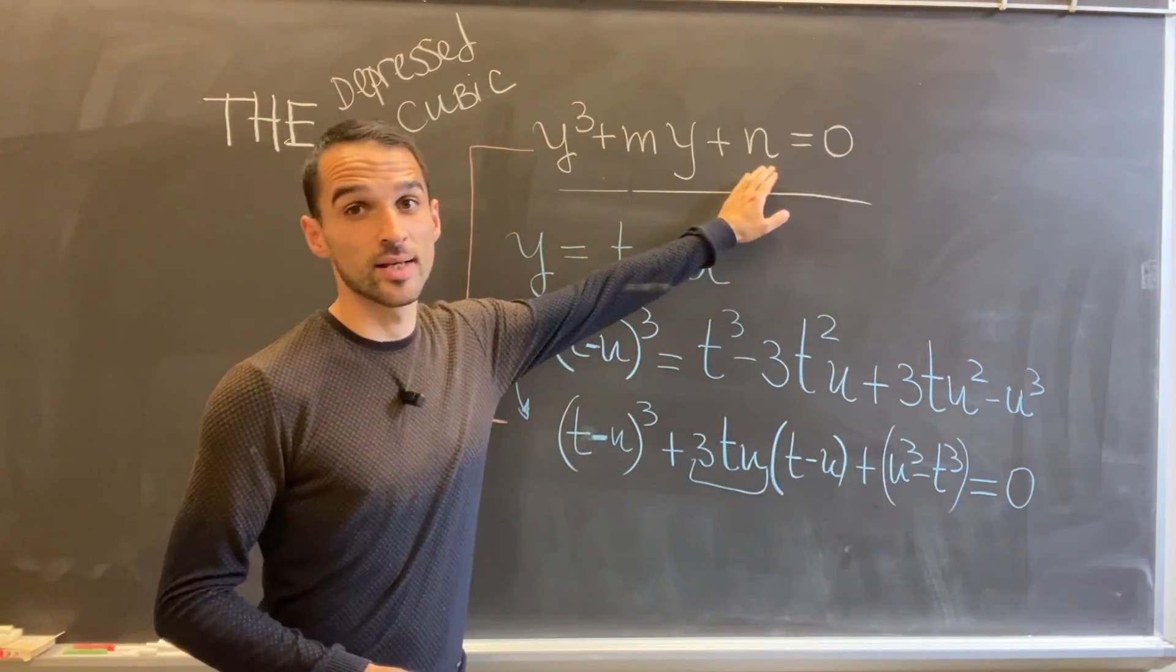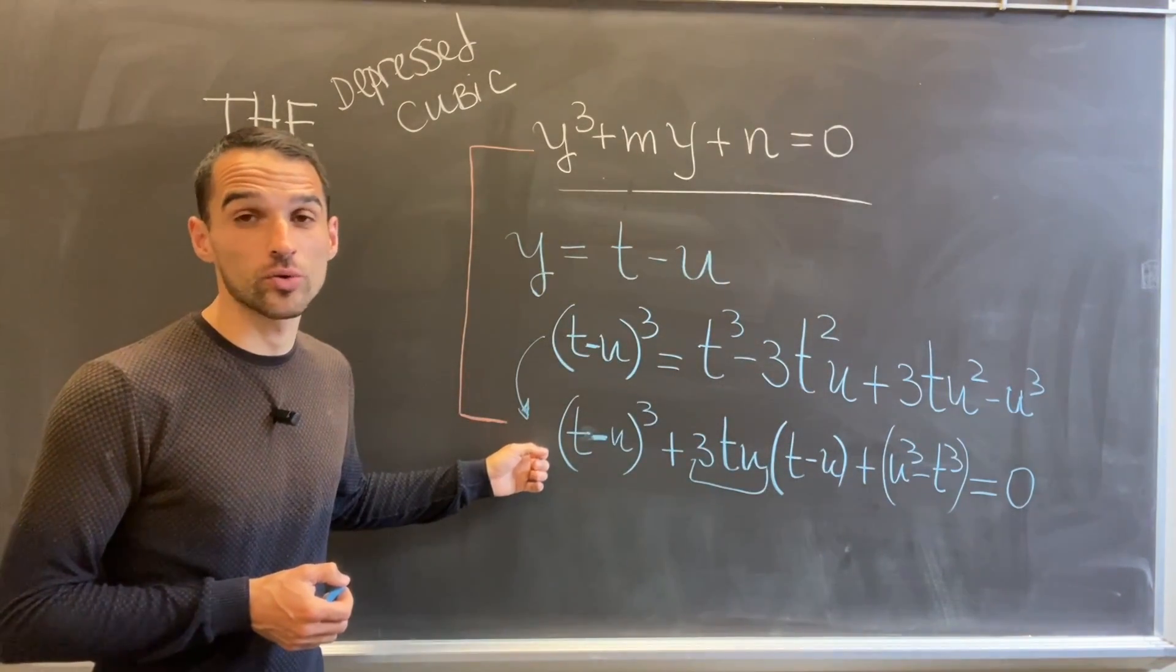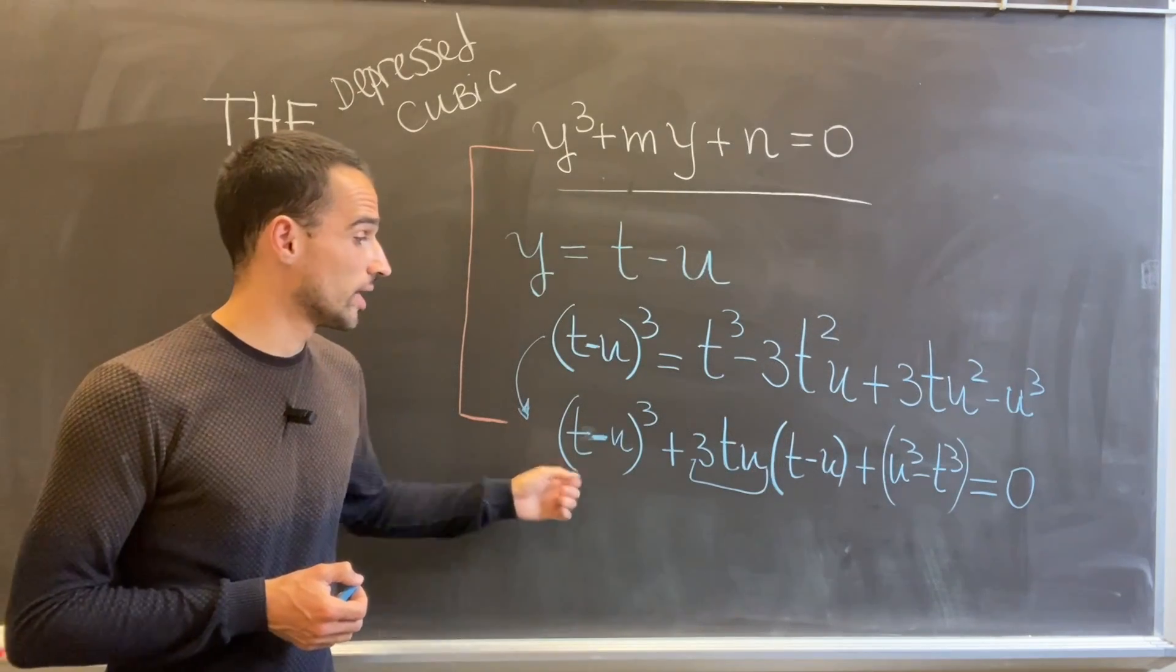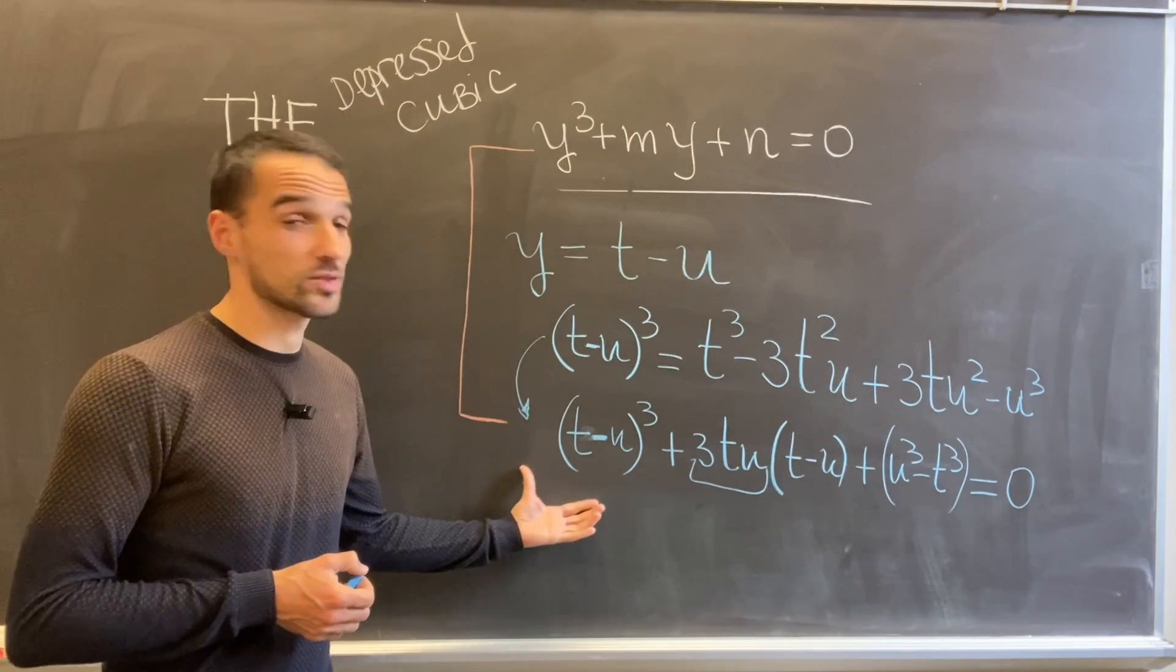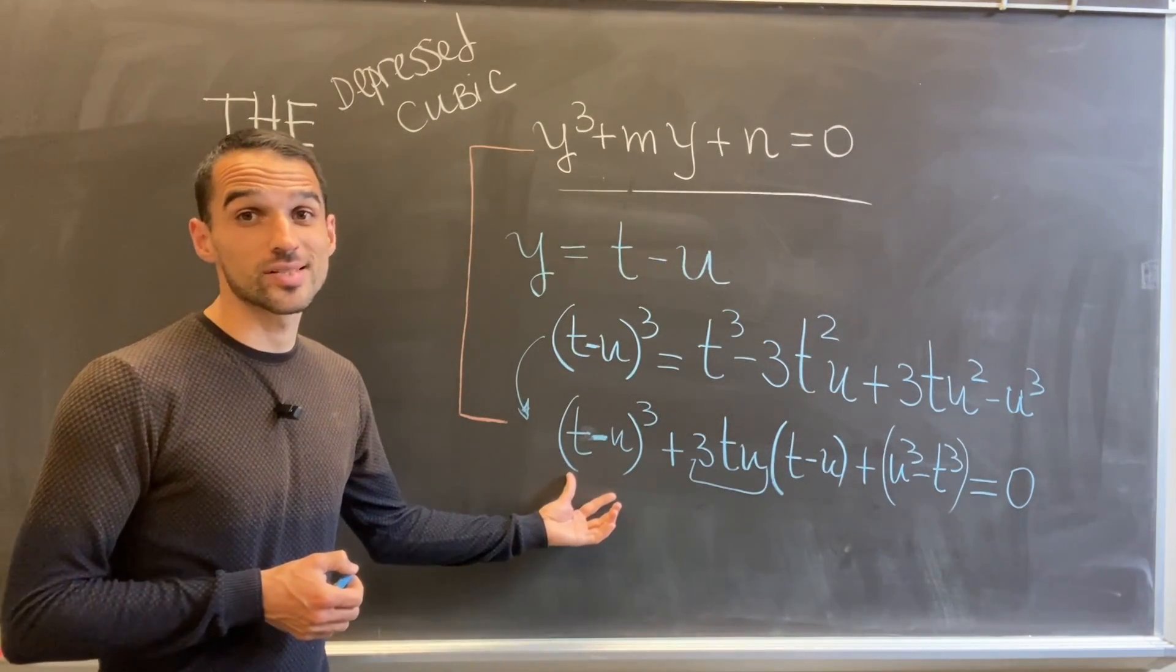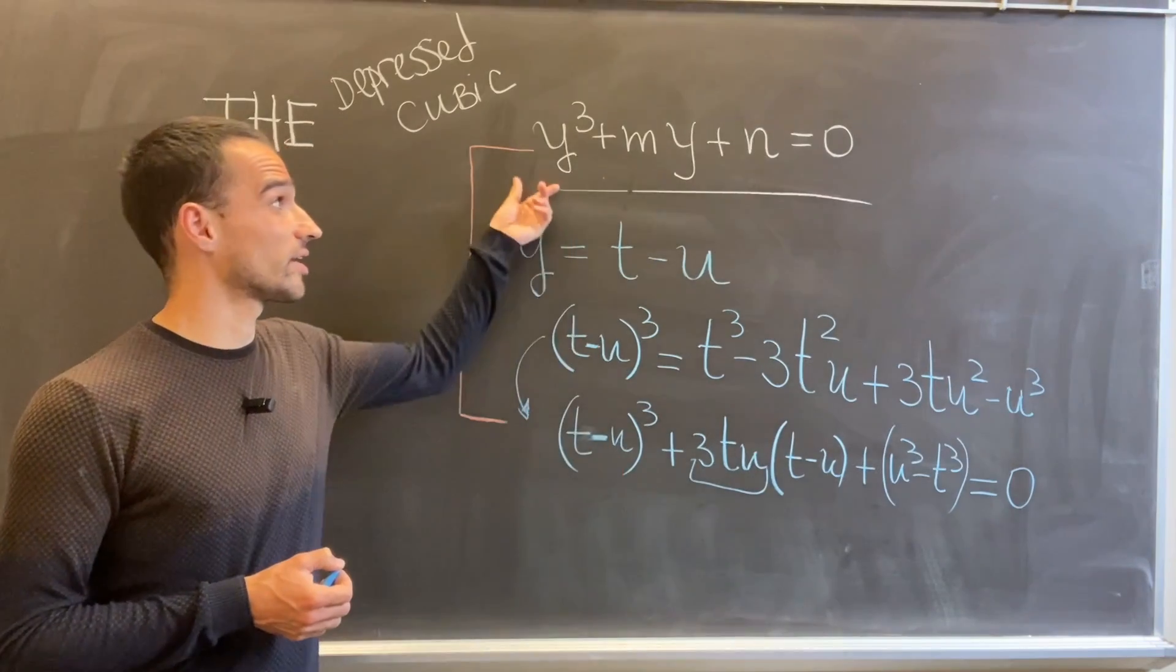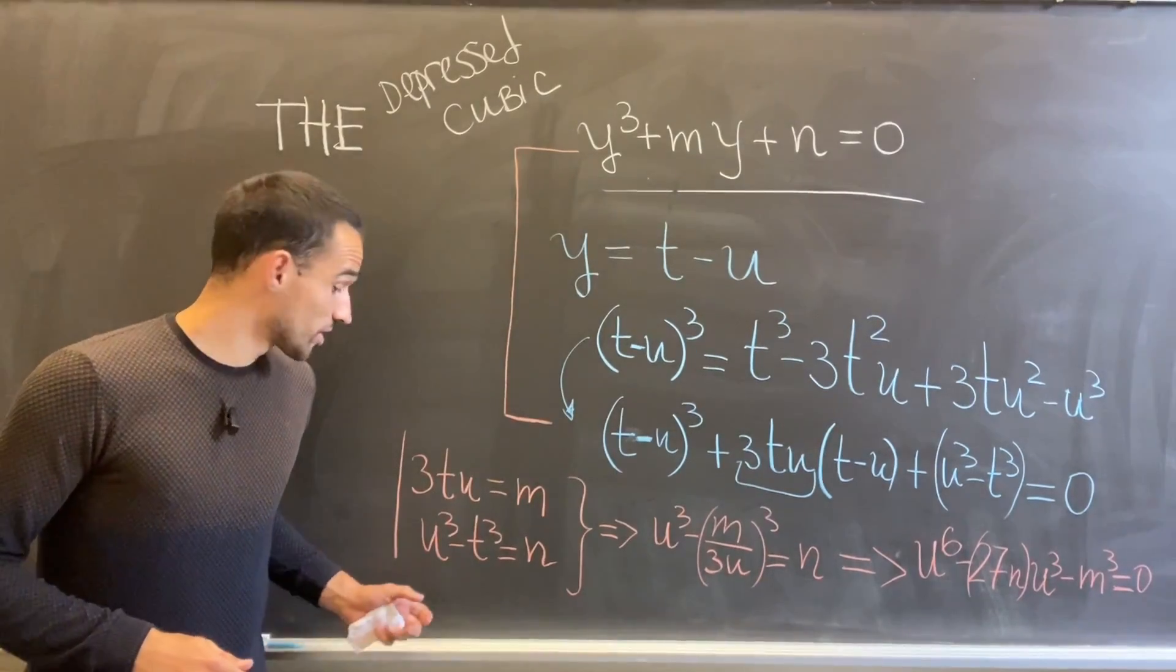And if I just find numbers t and u such that this 3tu equals m and this guy u³ - t³ equals n, then I would be done. The reason is that this equation holds for any t and u, and for my particular t and u that I found, this would hold as well. So basically this would mean that the difference t - u would satisfy exactly my depressed cubic.